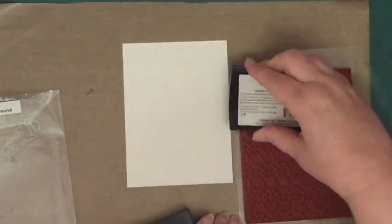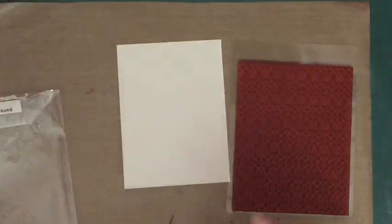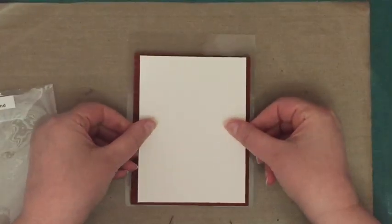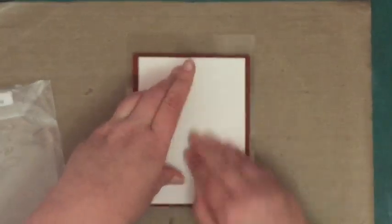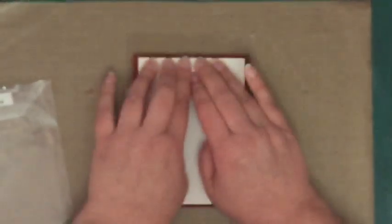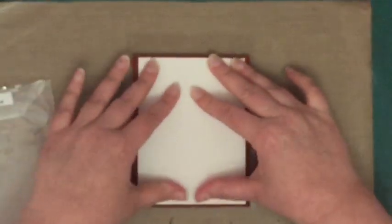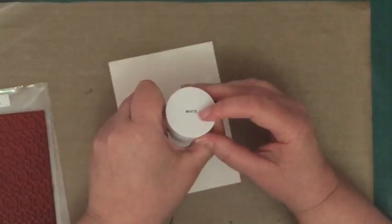Here I'm applying the Versamark ink and making sure that I pressed down on the smooth side of the cardstock because I want to get a good impression, making sure I rub all over to make sure that the Versamark ink gets into all those nooks and crannies of the watercolor cardstock.